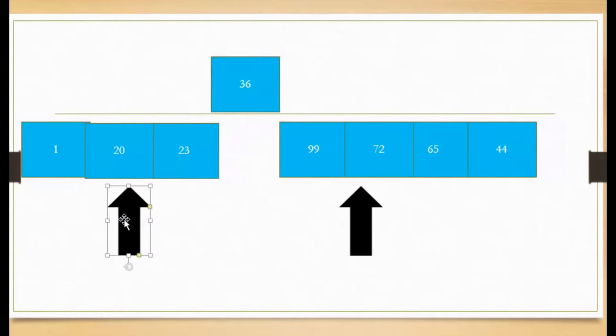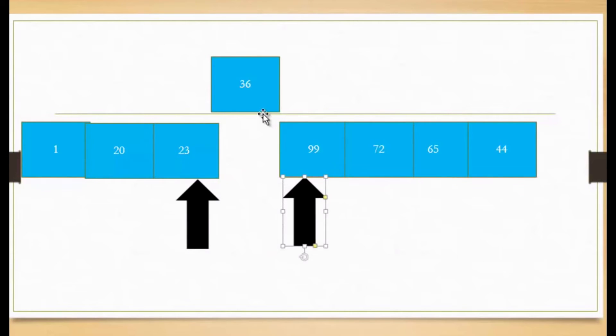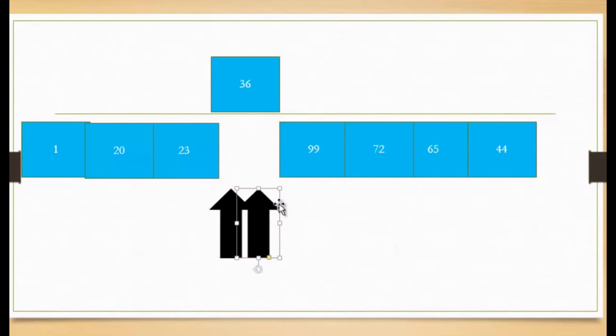So then again, I'm going to advance this arrow here and this arrow here. And I'm going to see that 99 is greater than 36. So I don't need to swap that. And 23 is less than 36. So I'm not going to do anything. And that leaves both the pointers at 36. So I'm not going to do anything to any of those.